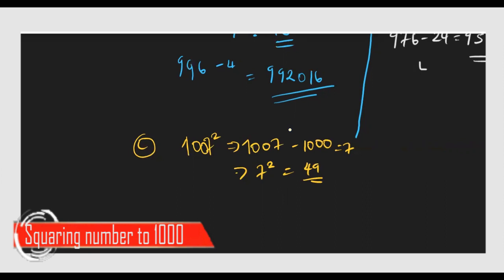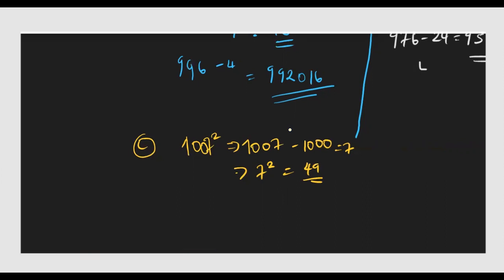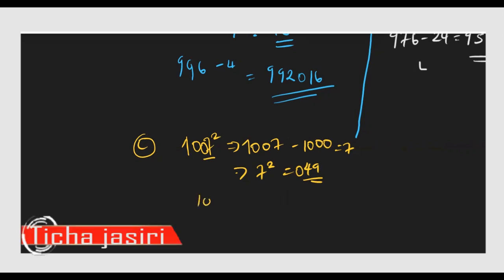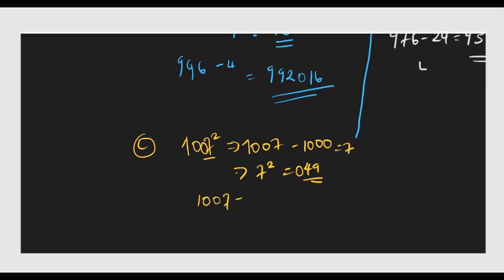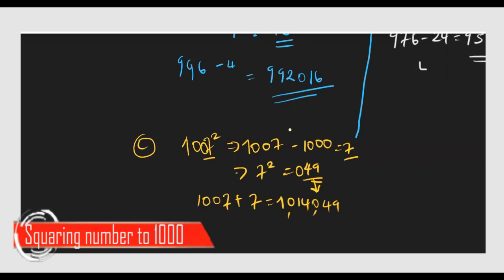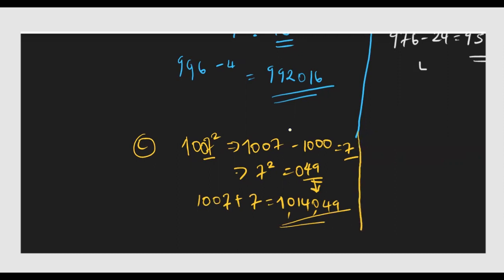Take that 7 and square it to get 49. That 49 becomes the last part of the answer — since we're working with thousands, it appears as 049 on the right side. Because the number is above 1000, we add: 1007 plus 7 equals 1014. So the final answer is 1,014,049.